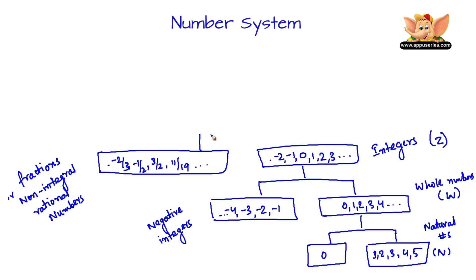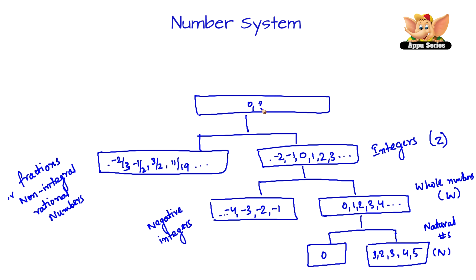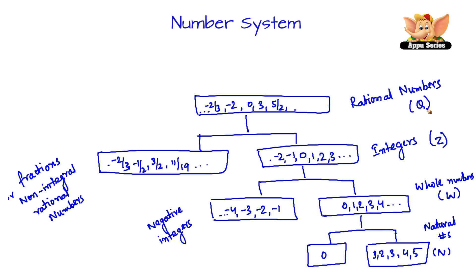Integers and fractions together are called as rational numbers. For example: 0, 3, 5 by 2, negative 2, minus 2 by 3, etc. — all these grouped together are called as rational numbers. Rational numbers are largely denoted by the capital letter Q.